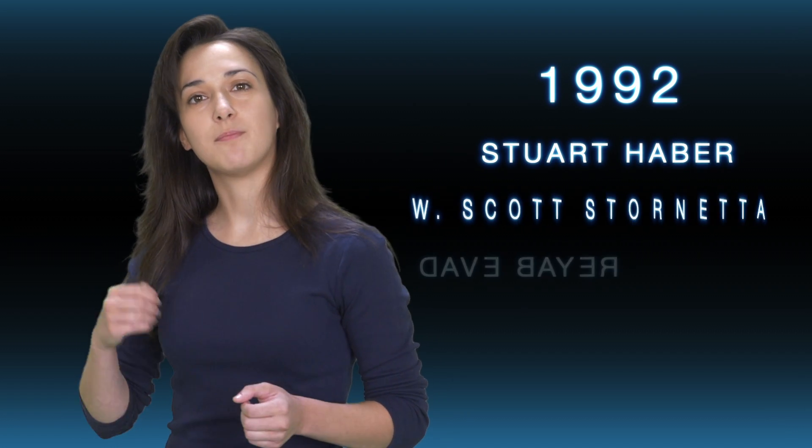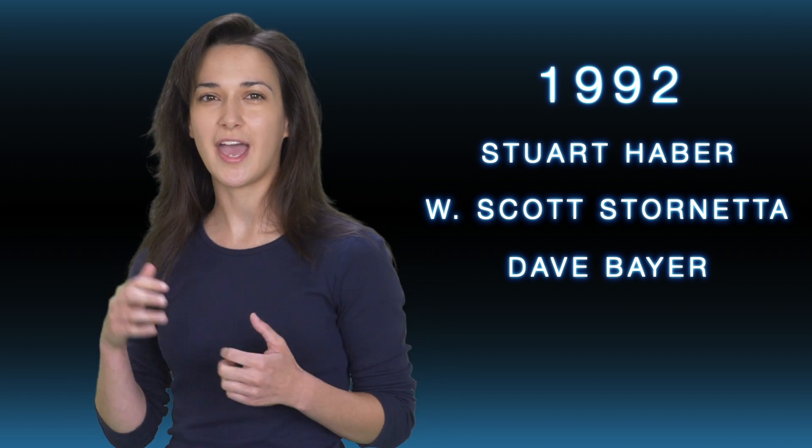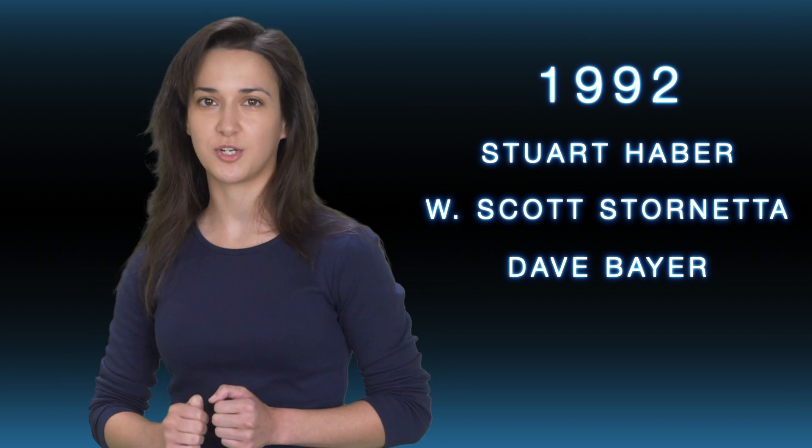In 1992, Haber, Stornetta, and Mr. Bayer enhanced their cryptographically-based blockchain technology by adding the use of hash trees, which are also known as Merkle trees.